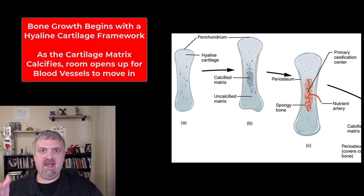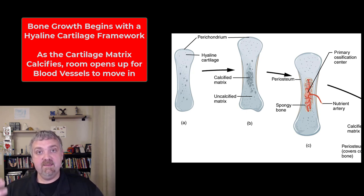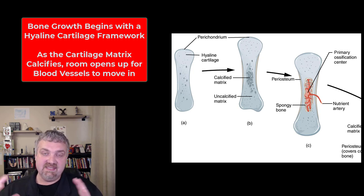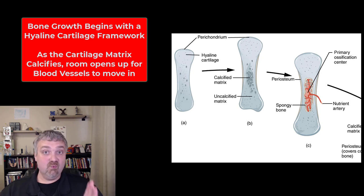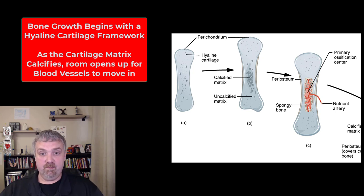Let's dive in with endochondral ossification. We started with that hyaline cartilage framework, and there are actually some remnants of that. When you see a bone — we'll cover this more when we talk about joints — the ends of your long bones are still covered with hyaline cartilage. Your long bones were hyaline cartilage, and everything but the tips became bone.